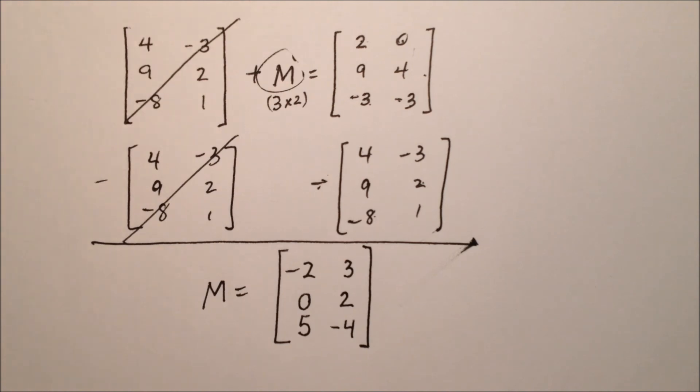So the solution for this equation is this 3 by 2 matrix, negative 2, 3, 0, 2, and 5, negative 4 will be the answer for M.